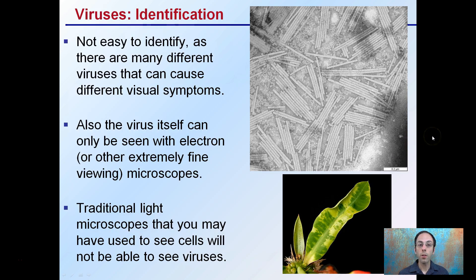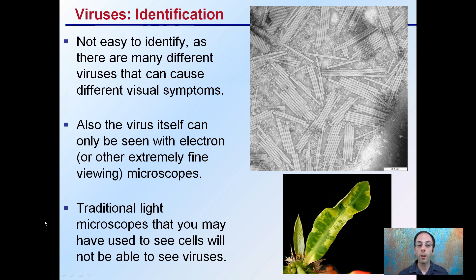One of the reasons why it's not easy to identify is there are many different viruses that can cause different visual symptoms. The mottling is one, but this isn't true for necessarily all viruses. Also, the virus itself can only be seen with an electron microscope or other very extremely fine viewing microscopes. Your traditional light microscopes that you may have used to look at cells in a biology class will not be able to see viruses.